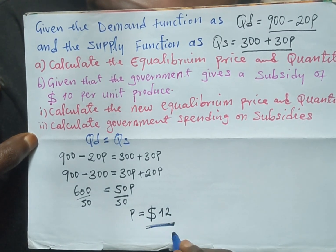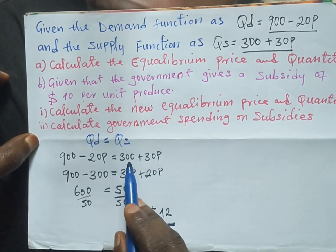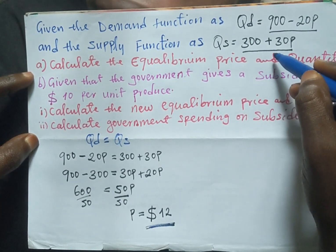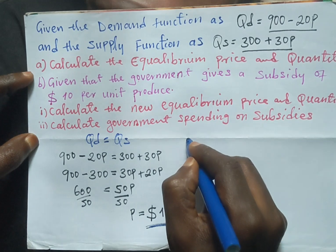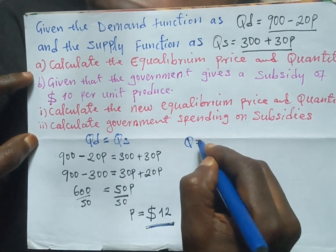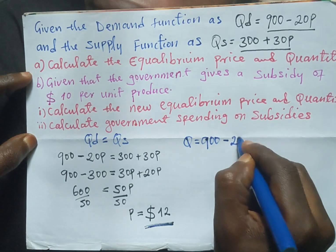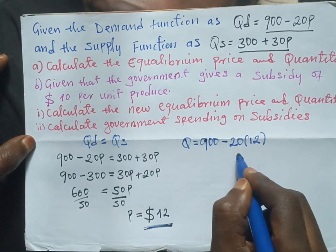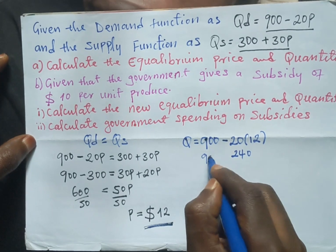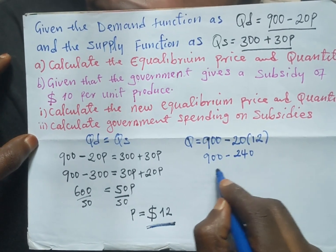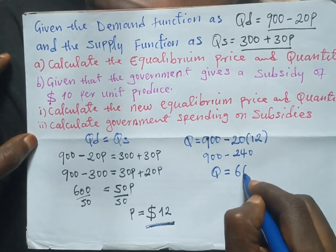Now we continue looking for the equilibrium quantity. We can substitute the equilibrium price into either the demand function or the supply function. Let's use the demand function: Q = 900 - 20 × 12. Multiplying 20 by 12 we get 240, then 900 - 240, so our equilibrium quantity is equal to 660 units.